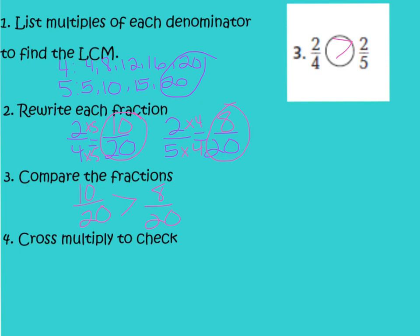Now we can use cross-multiplication to check this. We take our 2-fourths and our 2-fifths and cross-multiply: 5 times 2 is 10, and 4 times 2 is 8. We can see that 2-fourths is indeed greater than 2-fifths. Great job, guys. Let's go on to the next question.